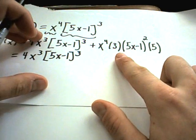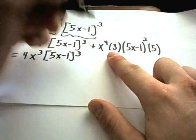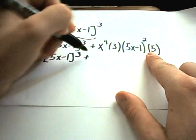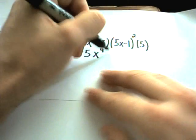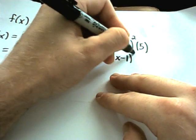And I'm going to multiply things out over on the right side. So notice I have a 3 and a 5. That's going to give me the 15. I have x to the fourth still hanging out. And then I have a 5x minus 1 squared.